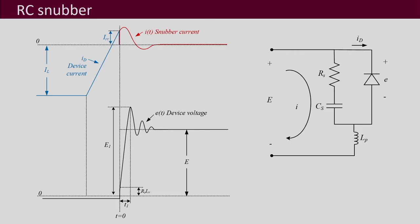Before going further, let me show you the waveforms and the circuit again. This is the circuit that we were discussing. RS and CS are the snubbers. I is the current through this loop which flows through the snubber and the parasitic inductance, and then you have the diode voltage E, and the diode current ID — these were the waveforms.